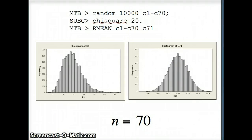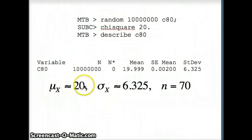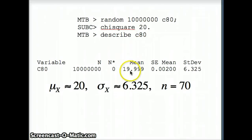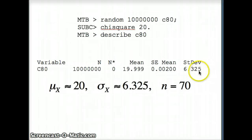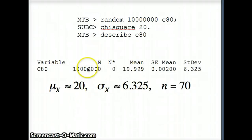In this case N is 70. To get the underlying mean and standard deviation, we take 10 million numbers in C80 from a chi-square-20 distribution. The mean comes out to 19.999, so since it's called chi-square-20, the underlying mean is probably 20. The underlying standard deviation is 6.325, which sounds reasonable. We can use these statistics to approximate the parameters because N is so large.